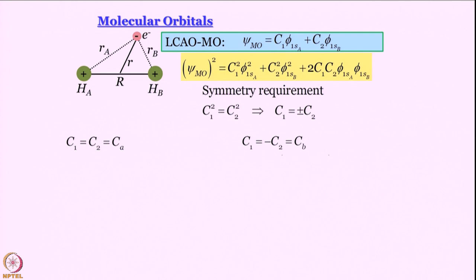In this expression for probability density, there is no reason why a should contribute more or less than b. So C₁² must be equal to C₂² which implies that C₁ can be ±C₂. When C₁ = C₂, I call it C_a, when C₁ = -C₂, I call it C_b. Actually, this is an ill-conceived nomenclature. It would have been better to call the first one C_b and the second one C_a, you will see why I am saying this. So this is the first wave function. I take the plus combination. ψ₁ is C_a multiplied by 1s_a + 1s_b. The other one is 1s_a - 1s_b multiplied by C_b.